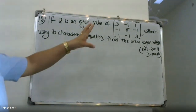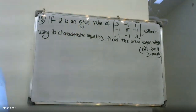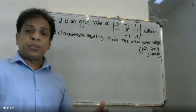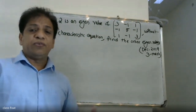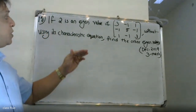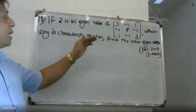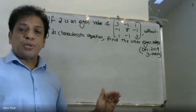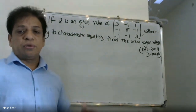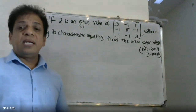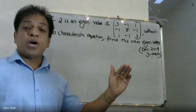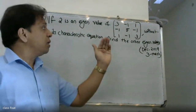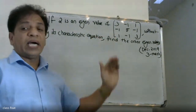We have one matrix, one known eigenvalue, and we need to find the remaining eigenvalues. For this 3 by 3 matrix, we have two unknown eigenvalues. Using the properties of eigenvalues, we can find them.